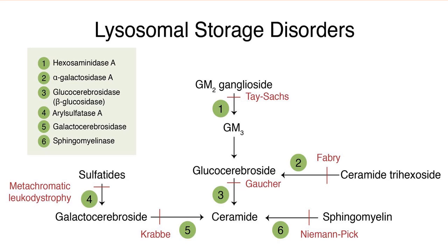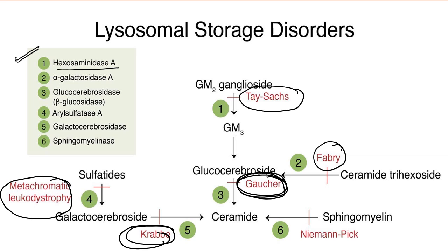Finally, this is the table for lysosomal storage disorders. On this side I have shown the blocks and the disease. On the left side I have mentioned the enzyme. Deficiency of hexosaminidase A is responsible for Tay-Sachs disease. Deficiency of alpha-galactosidase A is responsible for Fabry's disease. Deficiency of glucocerebrosidase, also known as beta-acid glucosidase, is responsible for Gaucher's disease. Deficiency of arylsulfatase A is responsible for metachromatic leukodystrophy. Deficiency of galactocerebrosidase is Krabbe's disease. Sphingomyelinase deficiency is responsible for Niemann-Pick disease.